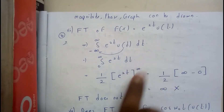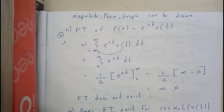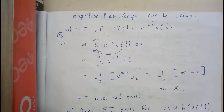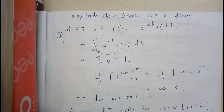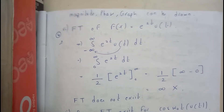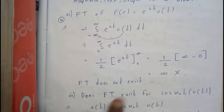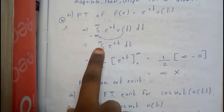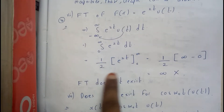This is not a standard equation, so we will first check whether the Fourier transform exists or not. You need to apply integration from minus infinity to infinity — if you get a value less than infinity, then the Fourier transform exists. So here we have the integral from 0 to infinity of e^(2t) dt.